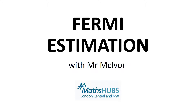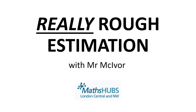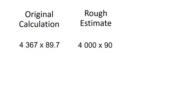What is Fermi Estimation? You can think of it as really rough estimation. Take an original calculation like this one: 4,367 times 89.7. In the past, you would have been taught that the simplest way to do this in your head is to round it off — 4,367 rounds off to 4,000, and 89.7 to 90. We call this single-digit rounding because we're rounding off each of our initial values to one single figure of accuracy, or one significant figure, as we tend to say in maths.